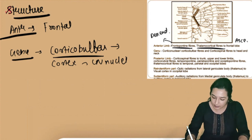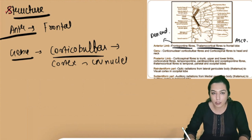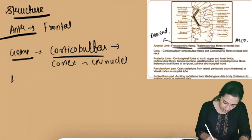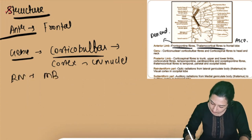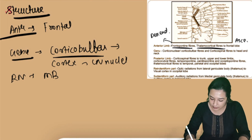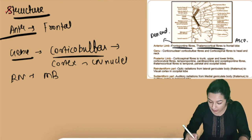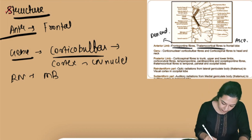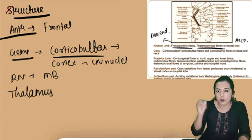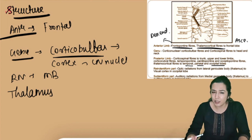The posterior limb contains corticospinal fibers descending to the trunk, upper, and lower limbs, as well as corticorubral fibers to the red nucleus in the midbrain. Apart from frontopontine, fibers from the temporal, parietal, and occipital lobes also go to the pons — these are temporopontine, parietopontine, and occipitopontine fibers. Ascending thalamocortical fibers to the temporal, parietal, and occipital cortices also pass through the posterior limb.